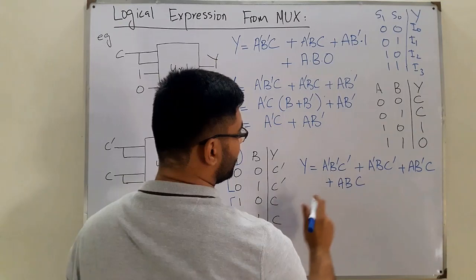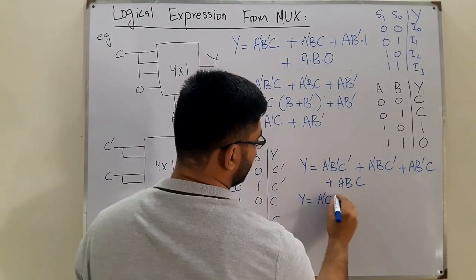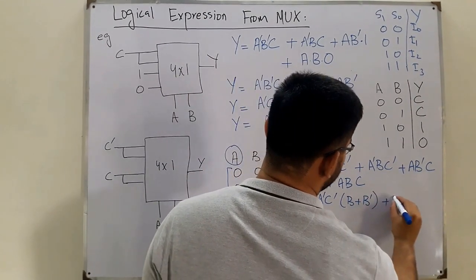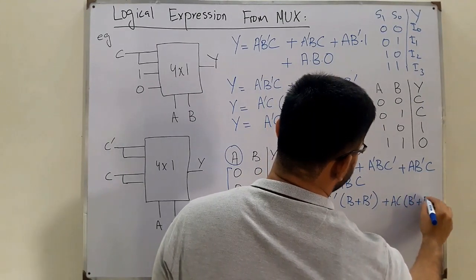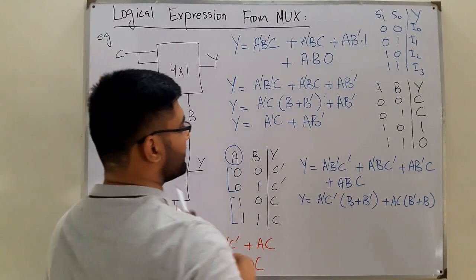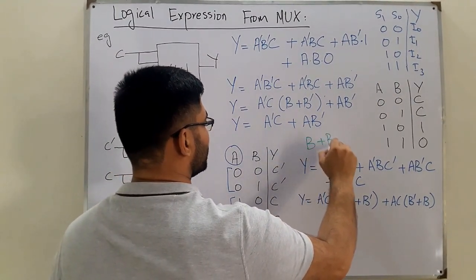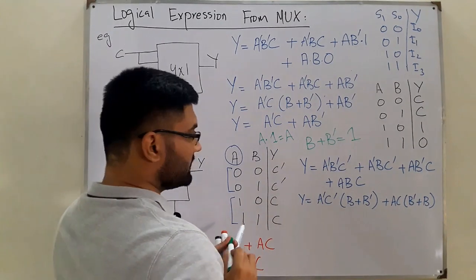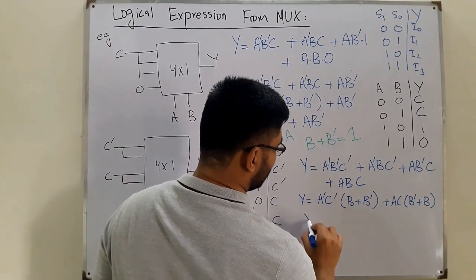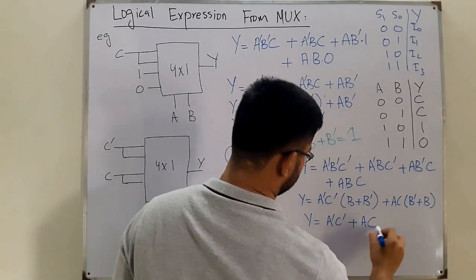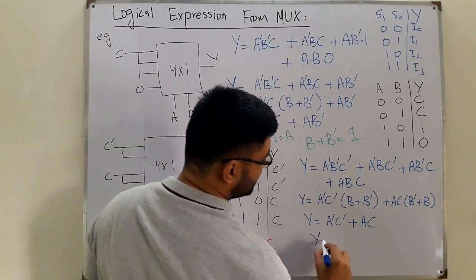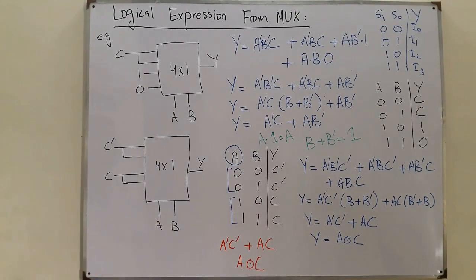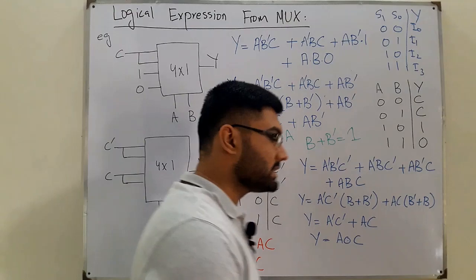Factoring A-complement·C-complement from the first two terms gives A-complement·C-complement·(B + B-complement). Factoring A·C from the remaining terms gives A·C·(B-complement + B). Since B + B-complement equals 1, both simplify: Y = A-complement·C-complement + A·C, which is A XNOR C. So the final logical expression for this multiplexer diagram is Y = A XNOR C.